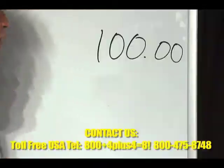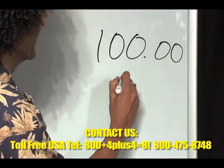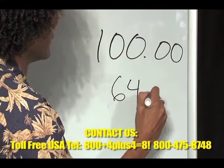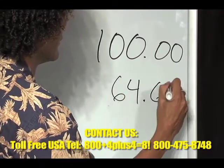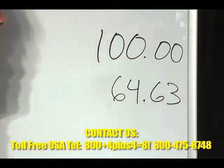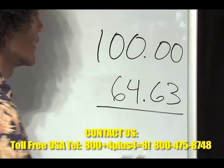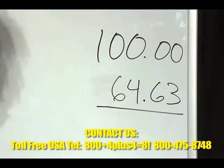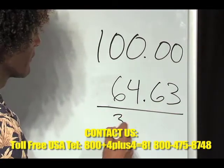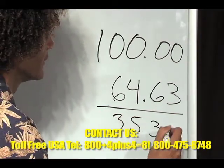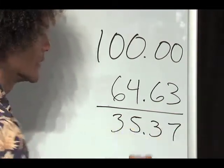Give me another number — 64, 63. Again, what do I have to do? Build a 9. Need a 3, need a 5, need a 3, need a 7. Done.